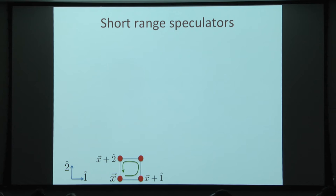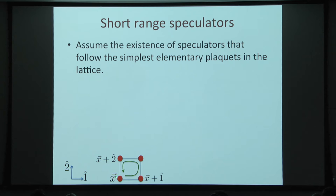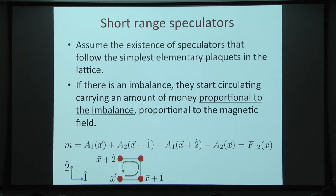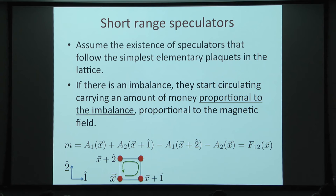To get the equations, we assume there exist certain short-range speculators that follow the simplest circuits in the grid. They speculate, and if there is an imbalance, they start circulating, carrying an amount of money proportional to the imbalance. If the opportunity to speculate is very big, there will be more speculators; if they gain nothing going around, there will be zero speculators carrying zero money. The amount of money they carry is proportional to the magnetic field — for small deviations, it's simply the magnetic field on that plaquette.